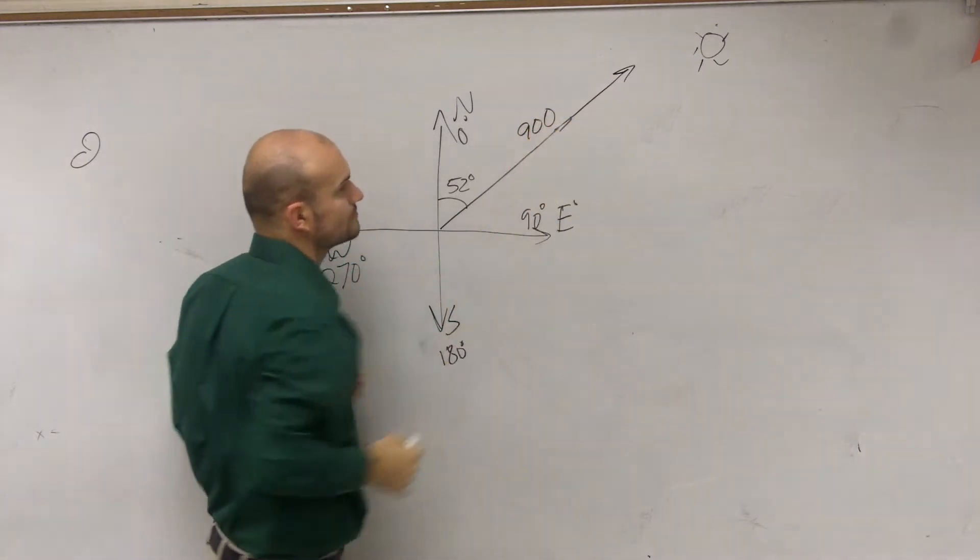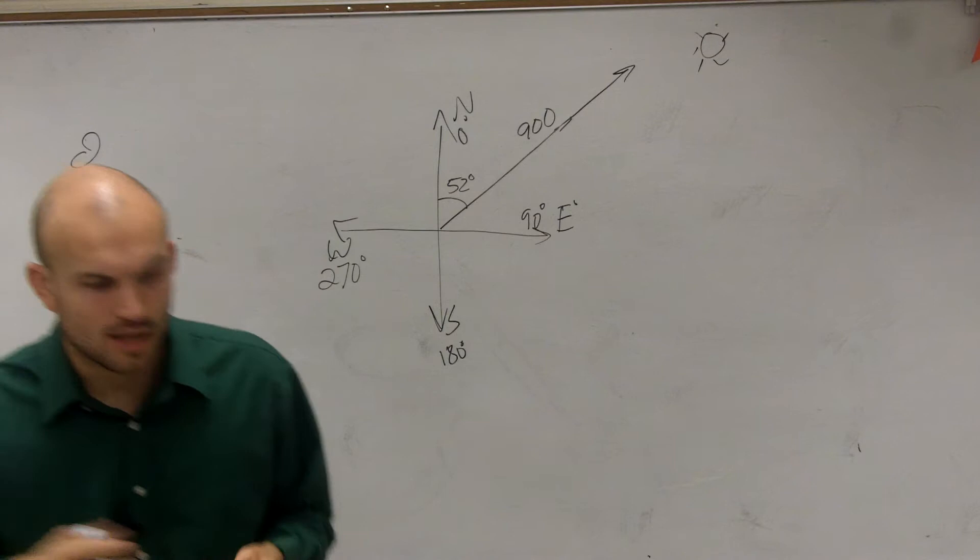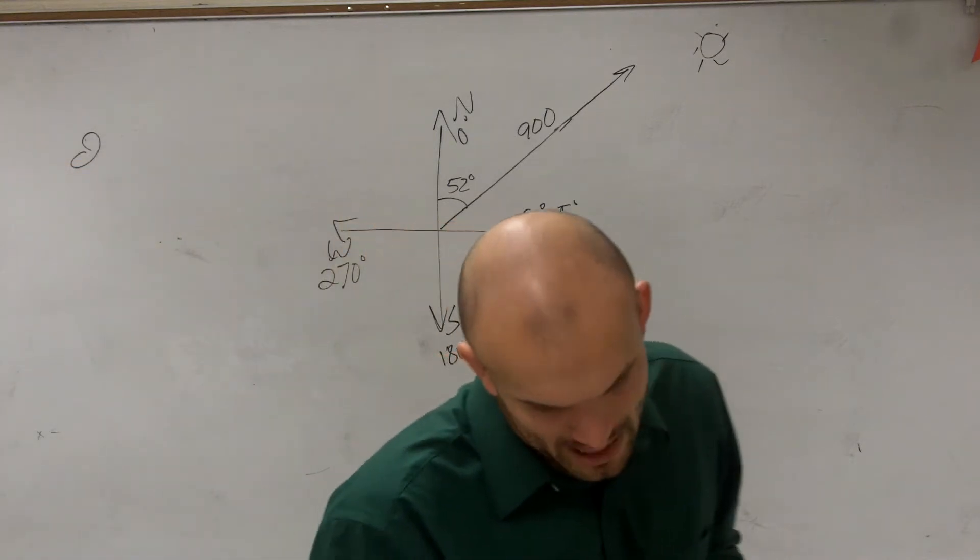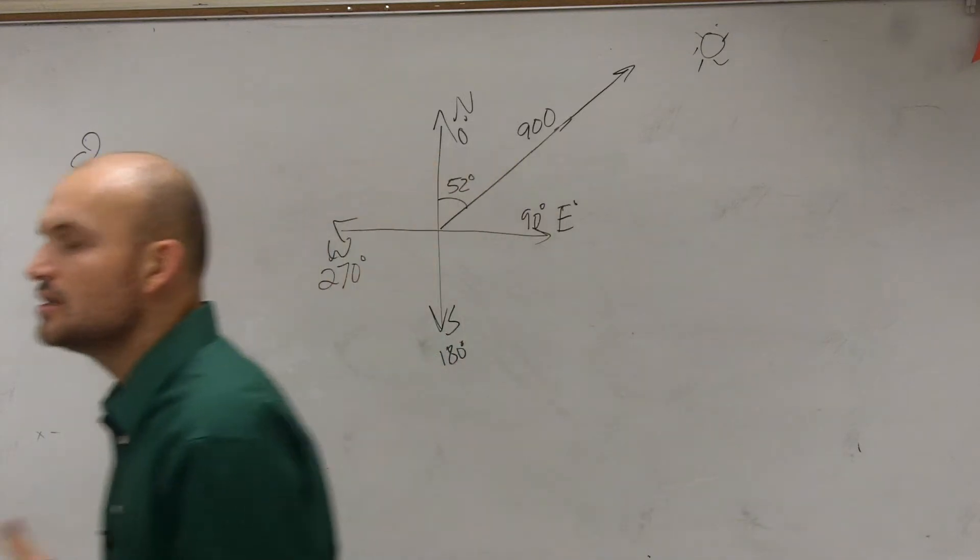900. Okay, so you can say that distance is going to be 900. And then what it asks for: how far north and how far east will the plane have traveled from the point of departure? So again,